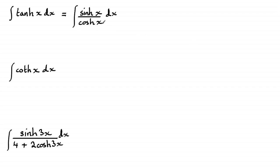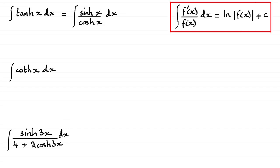That is, if you've got some function of x in the denominator, and you differentiate it, and it happens to be in the numerator, or multiplied by a constant, then it's going to be the natural log of the modulus of f of x, plus the constant of integration.